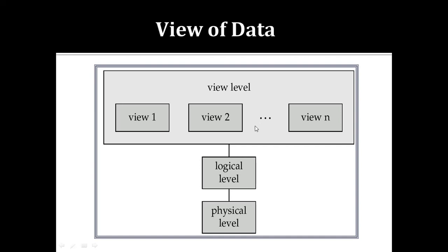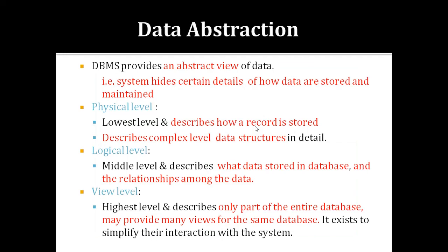In summary, data abstraction is the most important part of the database management system. It has three levels: the Physical Level (how data is stored), the Logical Level (what data is stored and its relationships), and the View Level (a user-level partial view of the database). The next point will be covered in the next session.